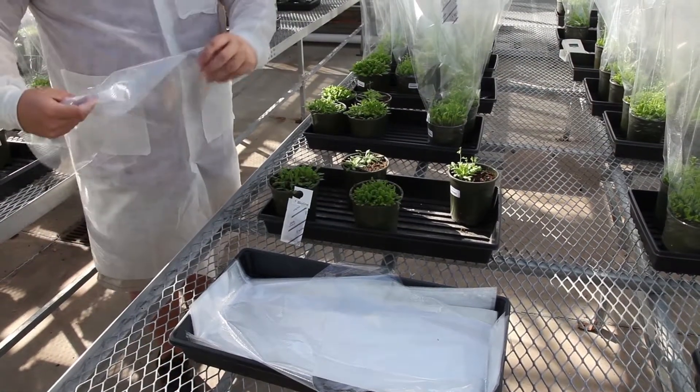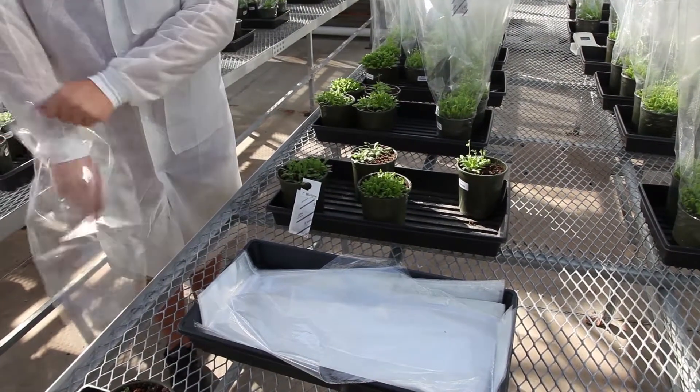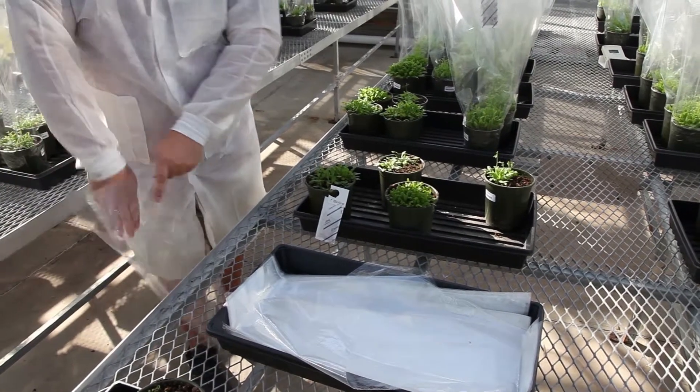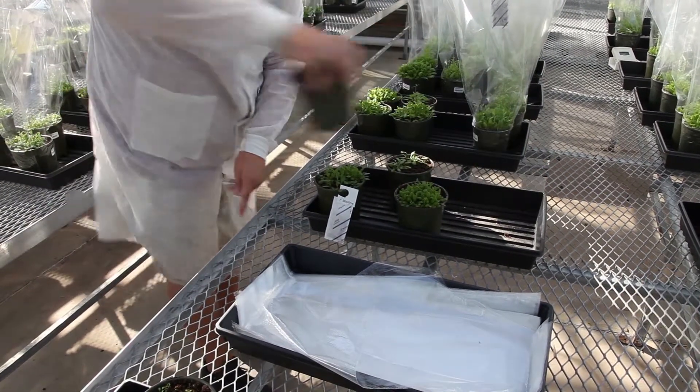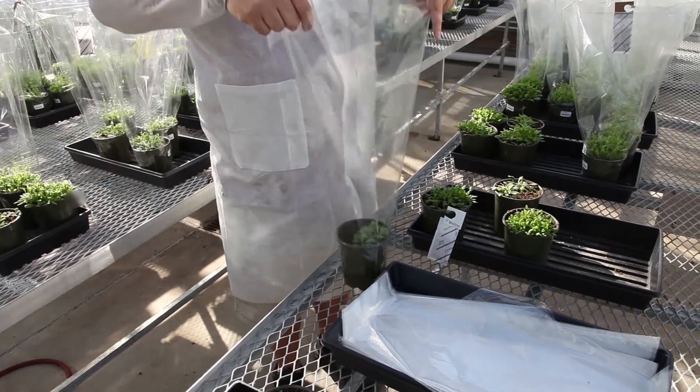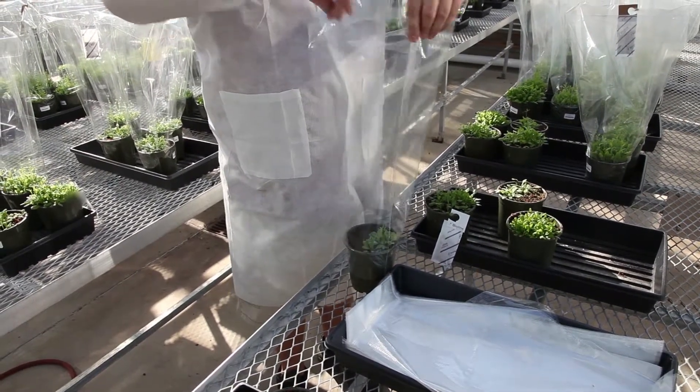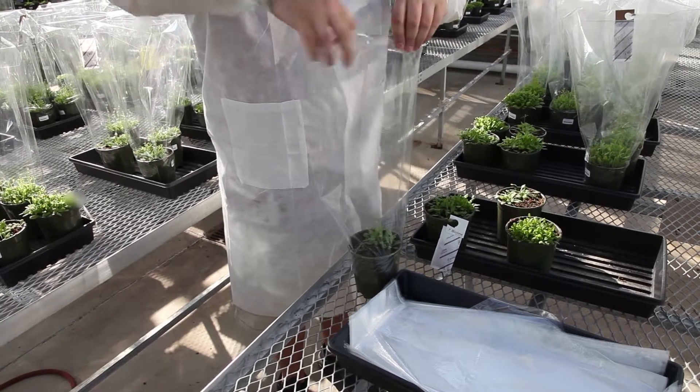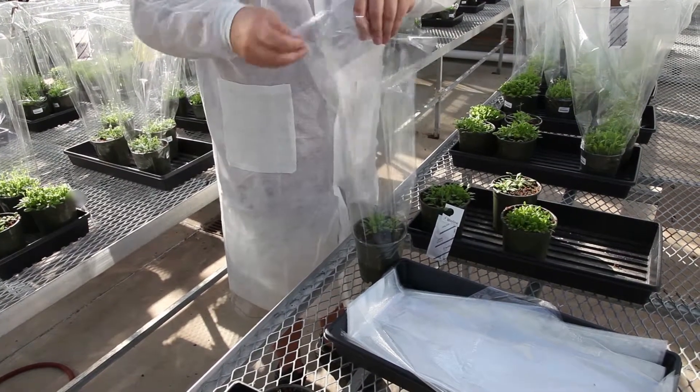To sleeve the pot, open the sleeve and slide the pot inside. Gently fold down the top edge of the sleeve and shape the opening into a triangle to provide support to the sleeve.